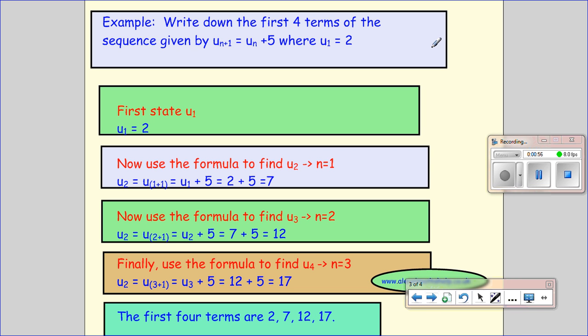Okay, so here's an example. Write down the first 4 terms of the sequence given by this, where the first term is that. So just state the first term, and then I want to find the second term. So second term, this in here is 2, there is 2.